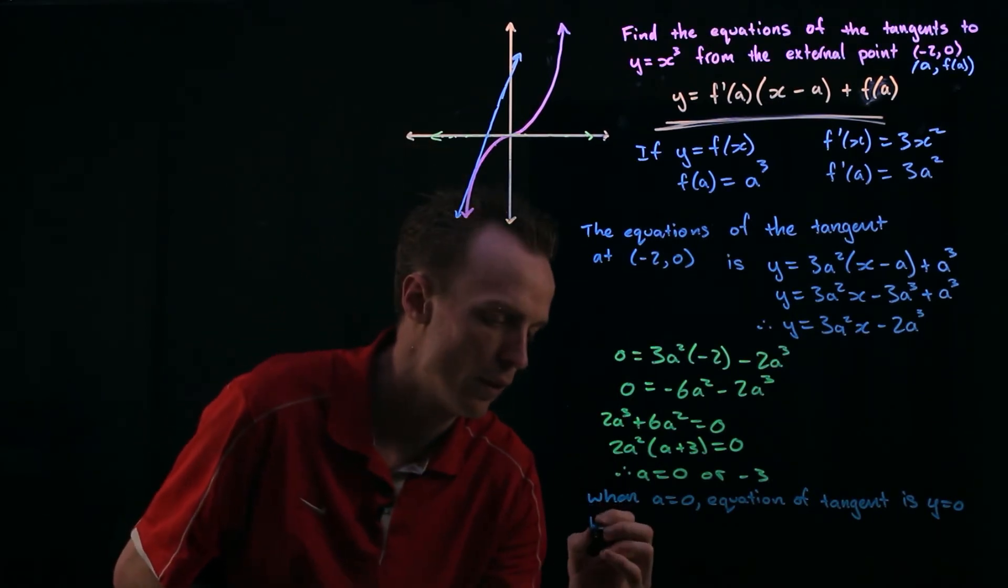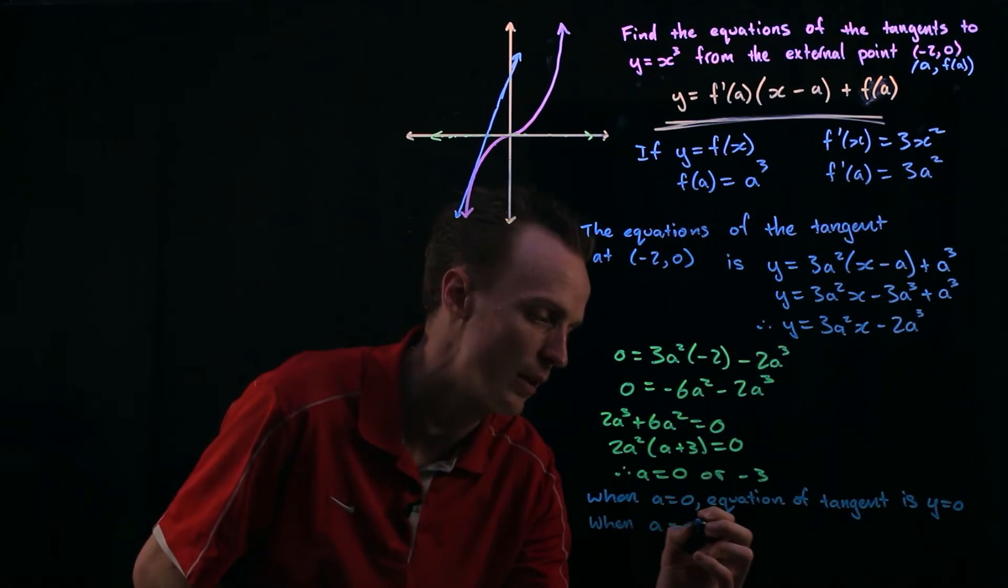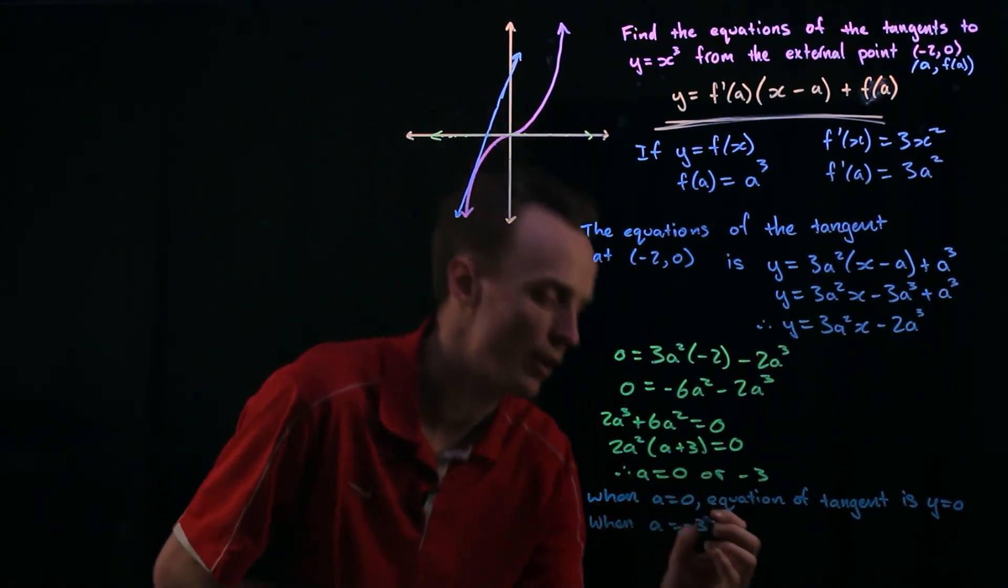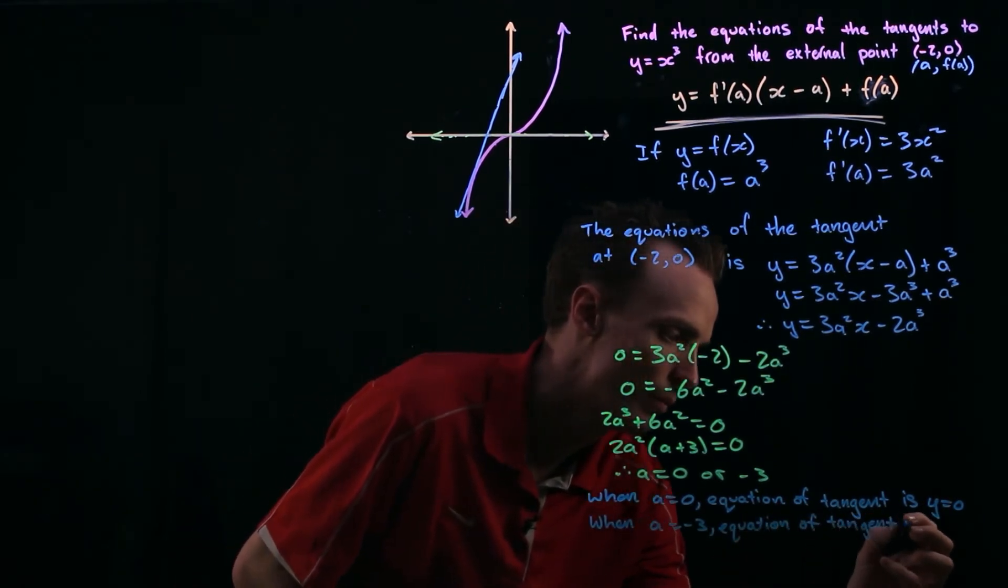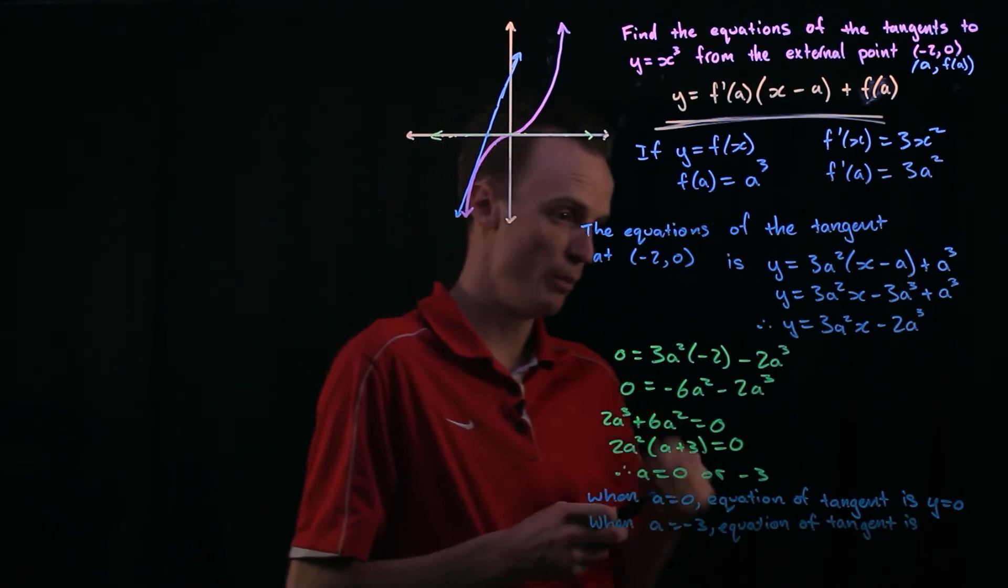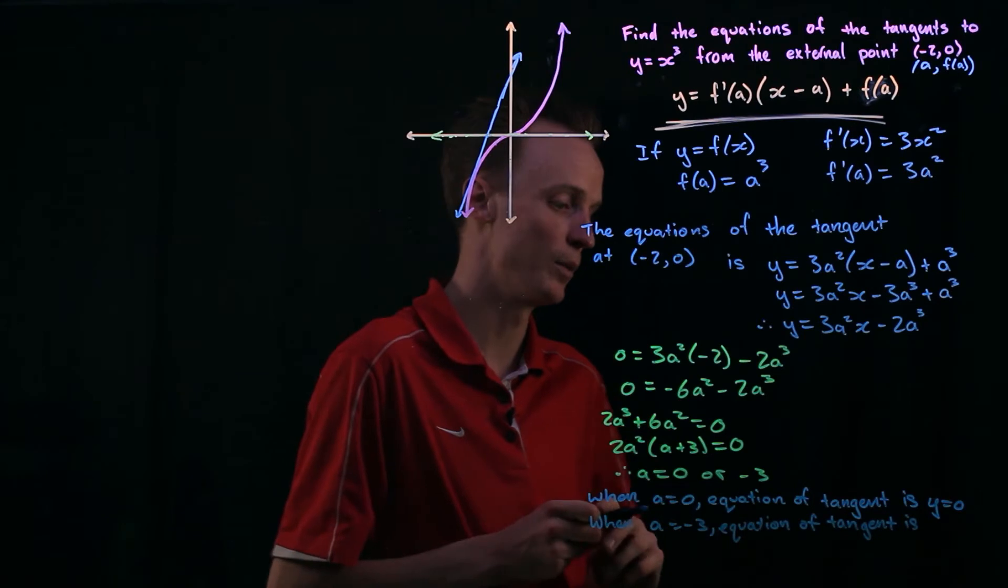But we can also find out when my a is equal to negative 3 which is the one that you can see just drawn in here. So the equation of the tangent is substituting negative 3 into this will be negative 3 squared which is 9 times 3 is 27.